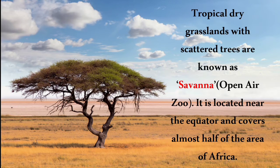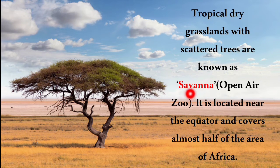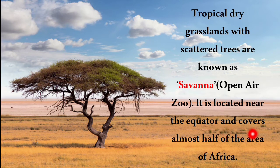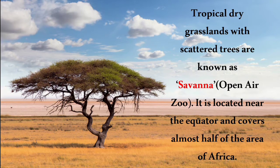Savannah is a tropical dry grassland with scattered trees, also known as the 'open-air zoo'. It is located near the equator and covers almost half of the area of Africa, serving as habitat for many animals.